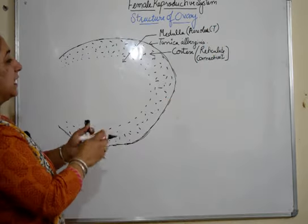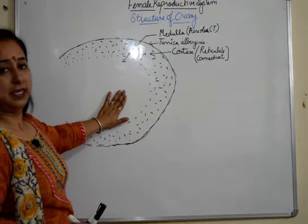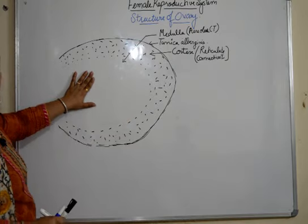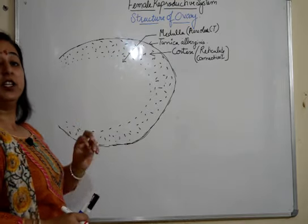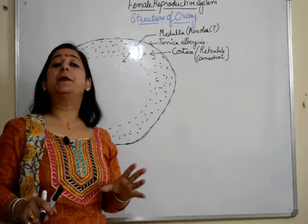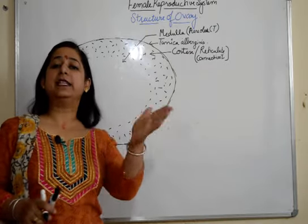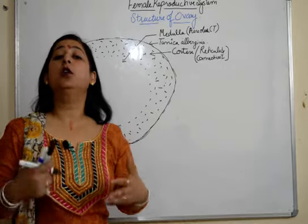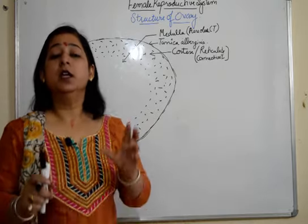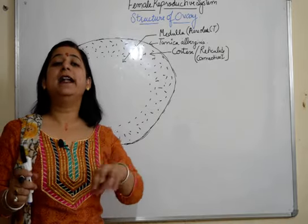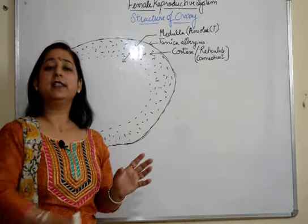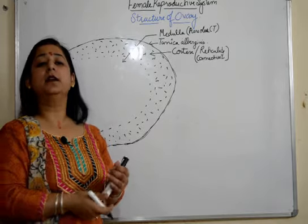So those are the three main parts of the ovary. Inside we have follicles arranged in different stages. If you see a section of the ovary, you will observe follicles present at different stages, because it is an ongoing process — every month a new Graafian follicle is formed and an egg is released, so all stages will be visible in the ovary.